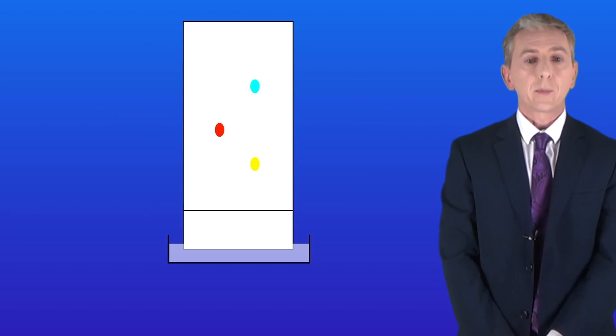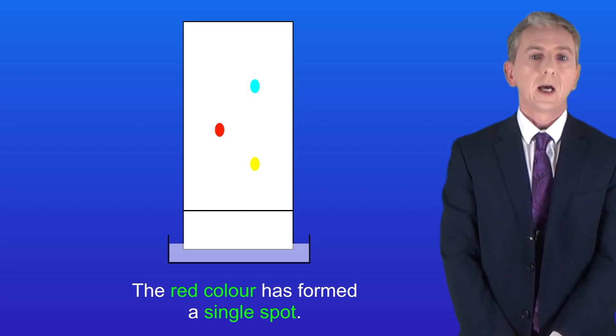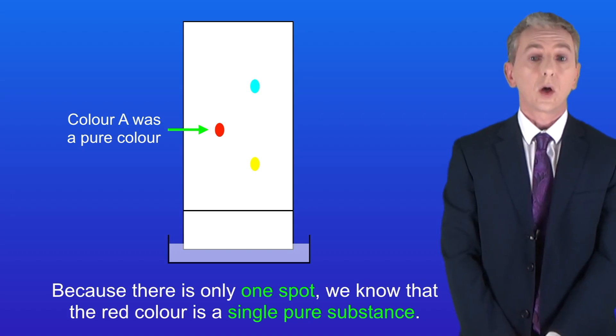So after a while the paper could look like this. As you can see the red colour has formed a single spot and we can see that here. Because there's only one spot we know that the red colour is a single pure substance.